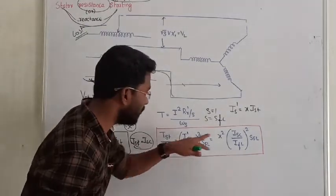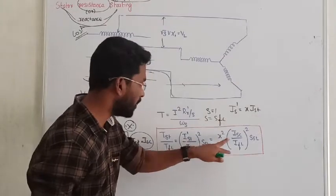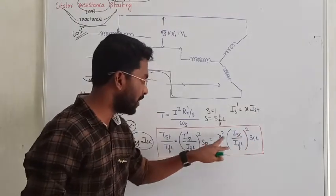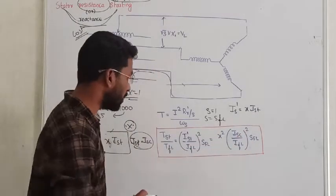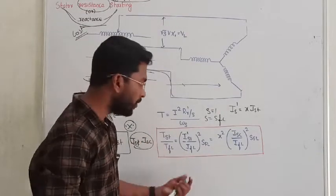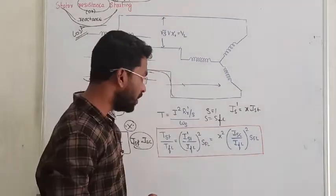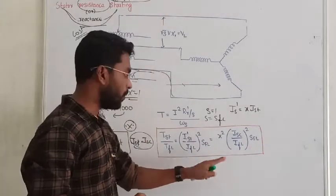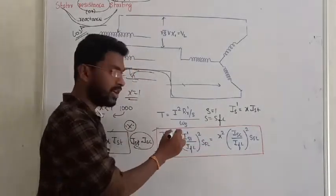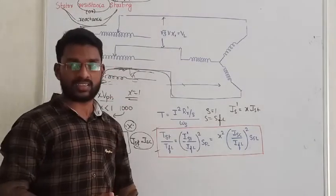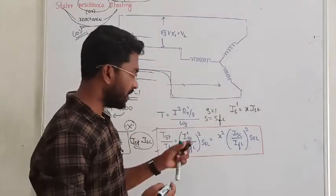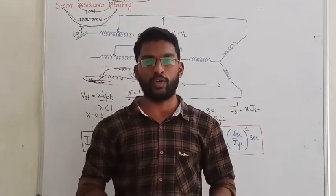Since the starting current is X times the actual short circuit current, the starting torque becomes X² times the actual starting torque. That is how we control the starting current and the torque-to-starting relation in the case of Stator Resistance or Stator Reactance starting method. This is all about the Reduced Voltage Method. You can ask questions in the comment section. Thanks for watching.